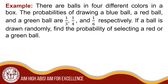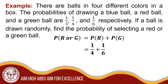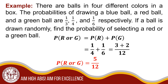There are balls in four different colors in a box. The probability of drawing a blue ball, red ball, and a green ball are 1 third, 1 fourth, and 1 sixth respectively. If a ball is drawn randomly, find the probability of selecting a red or a green ball. P(R union G) = P(R) + P(G) = 1 fourth + 1 sixth = 3 plus 2 over 12. Therefore, the probability of R union G is equal to 5 over 12.